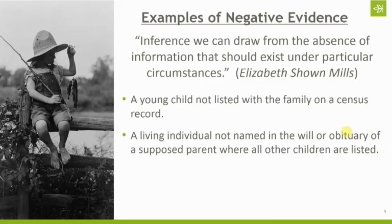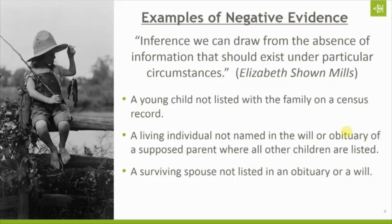Another example: a living individual not named in the will or obituary of a supposed parent when all other children are listed. If you think you've identified the parents of an individual — even if you have direct evidence stating these are the parents — and you find a will or obituary for that parent where all their other children are listed but this person is not, that may be evidence that the person is not actually their child. That's something you expect to be there that is not there.